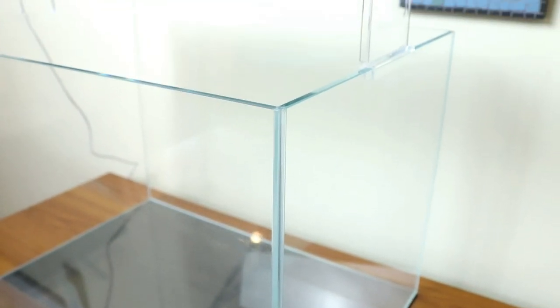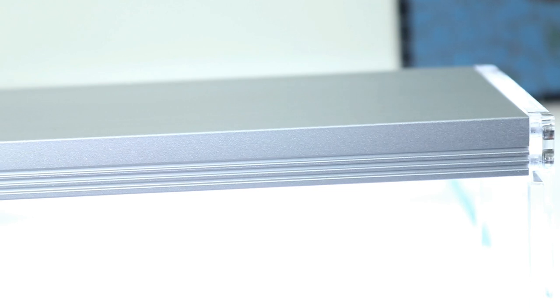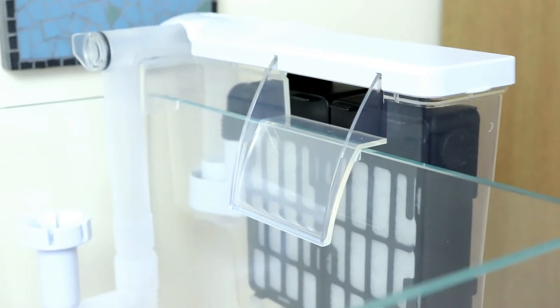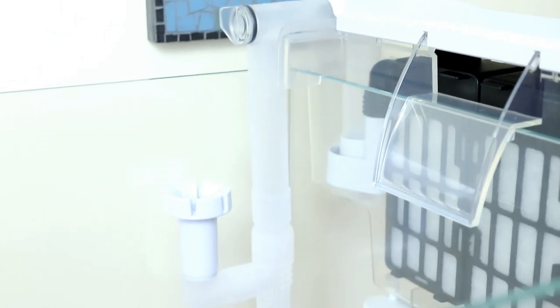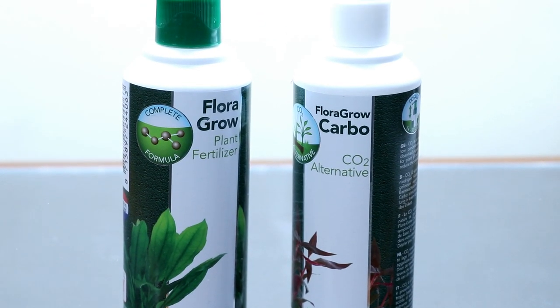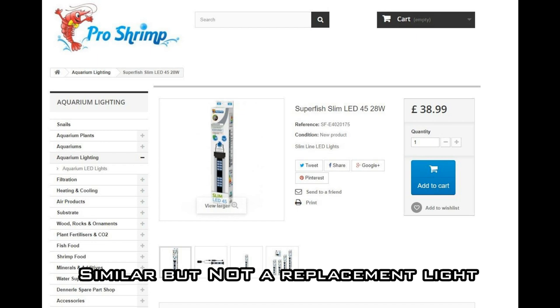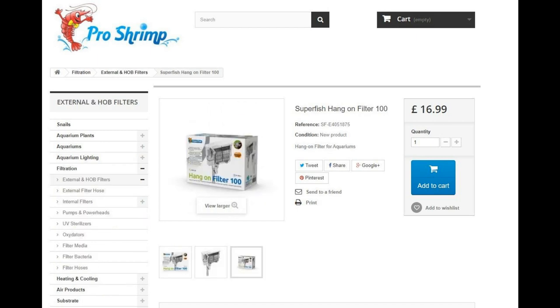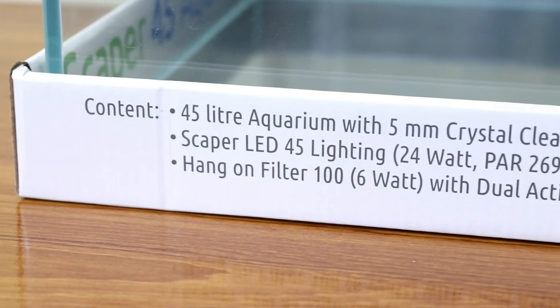The kit cost me £99, which certainly isn't cheap for a 45 liter tank, but considering the amount of equipment that it comes with, and the standard that it's been built to, I'm really not complaining. The light itself I would expect to pay at least £30 for, and the filter is £16 by itself, so I would say that this kit is good value for money.